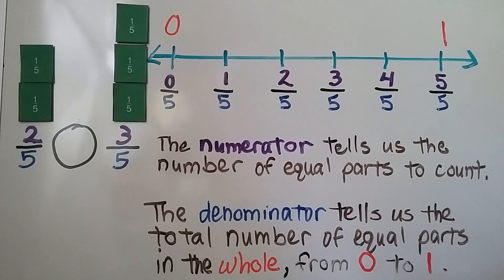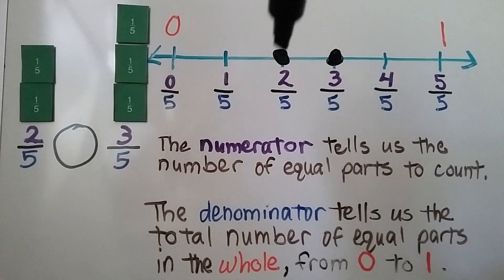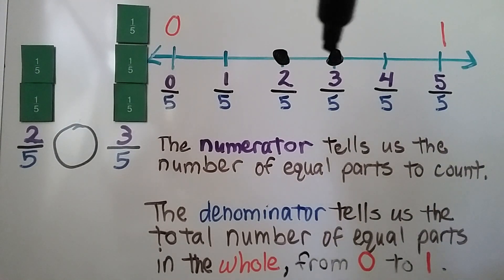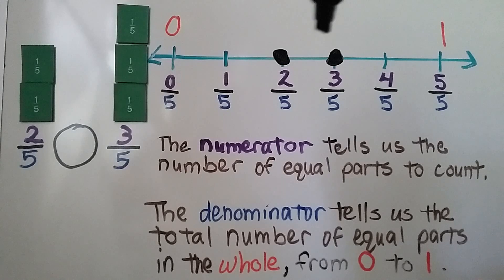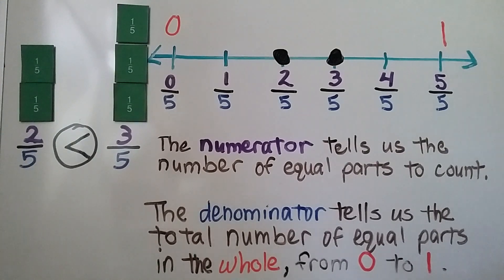We can locate 2 fifths on the number line, and we can locate 3 fifths on the number line. We see that 3 fifths is farther to the right — it's closer to 1 — so it's greater than 2 fifths. So here we can say 2 fifths is less than 3 fifths.